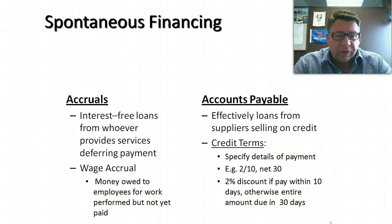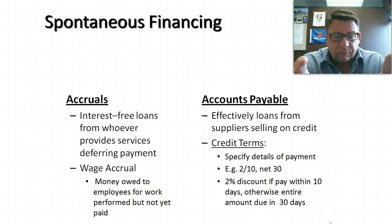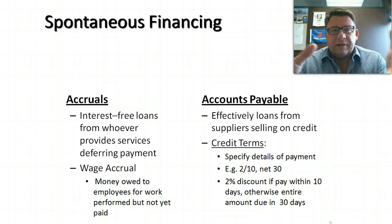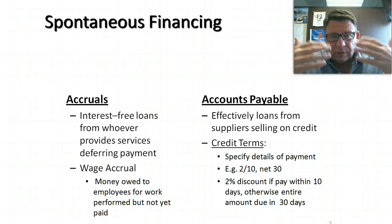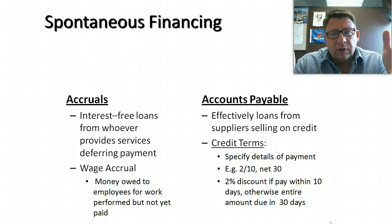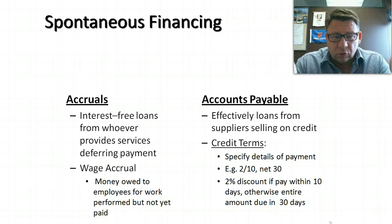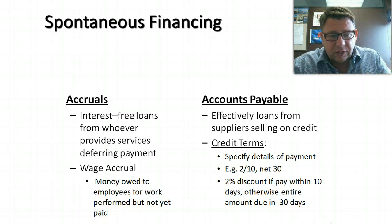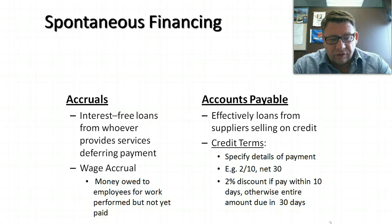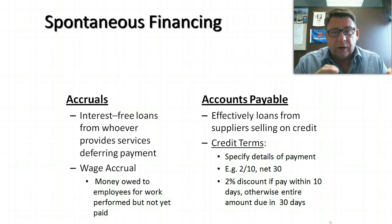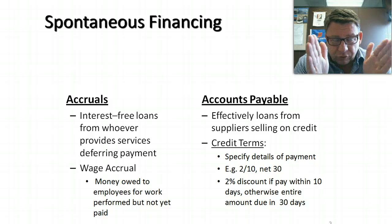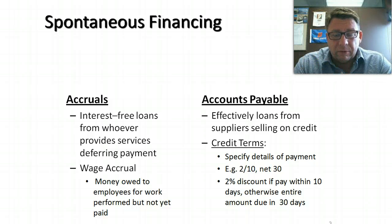Spontaneous financing. With an accrual, this is really an interest-free loan for whoever's provided the services where they've deferred the payment. For example, you have somebody come into your house and they do some house painting for you, and they send you a bill, and you have 30 days to pay it. That's a type of accrual — an interest-free loan for 30 days. Wages are another type of accrual where we owe money to employees for the work they've done but we've not yet paid them. That's a very short-term but interest-free loan.